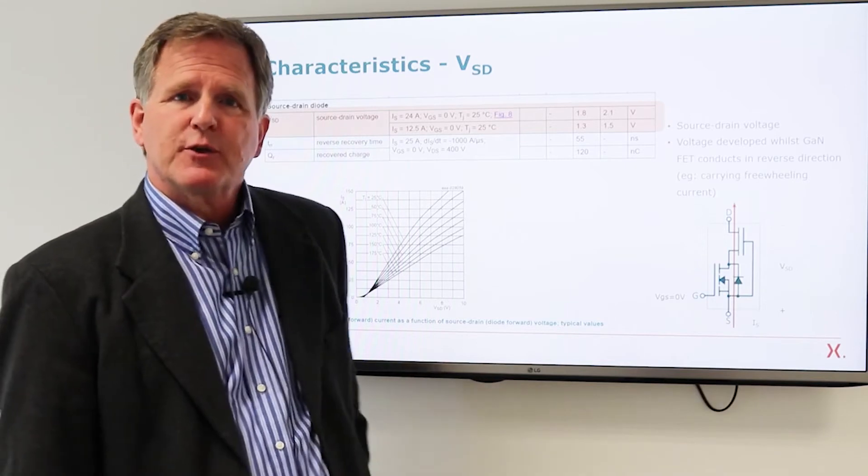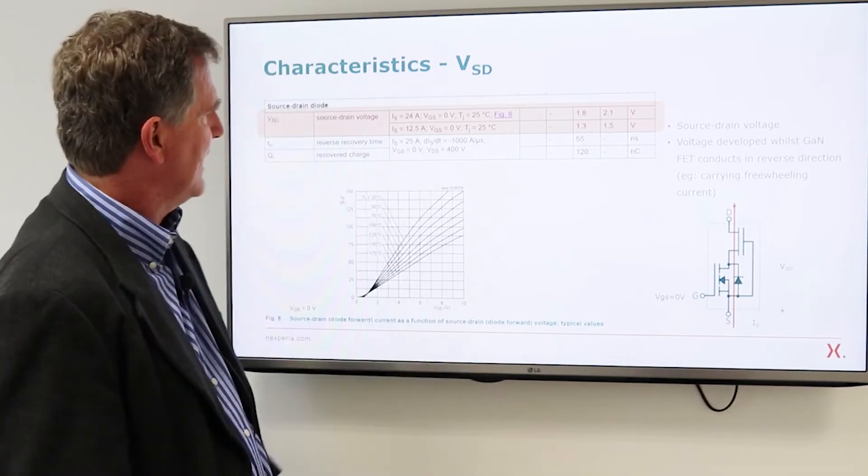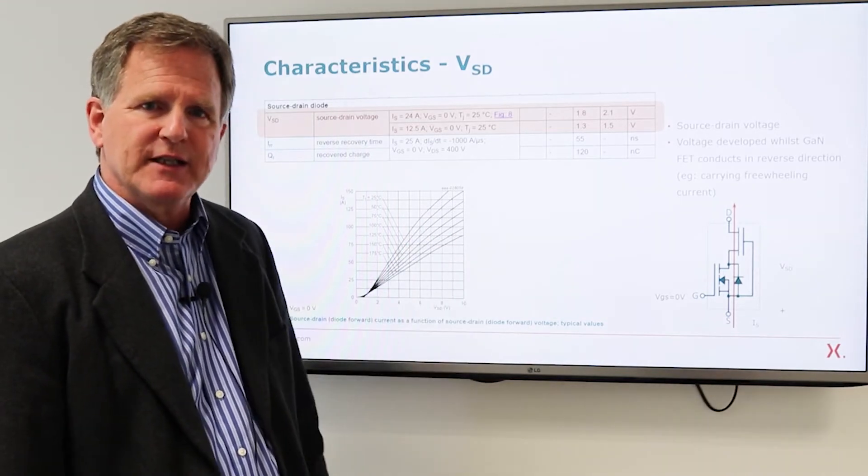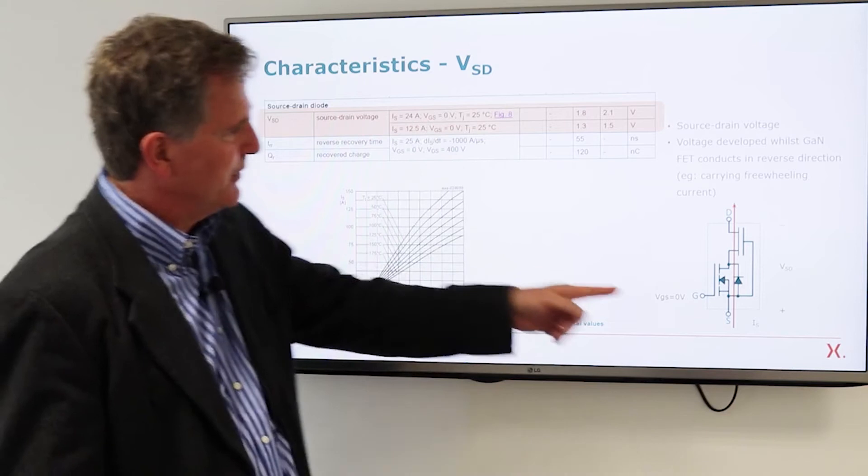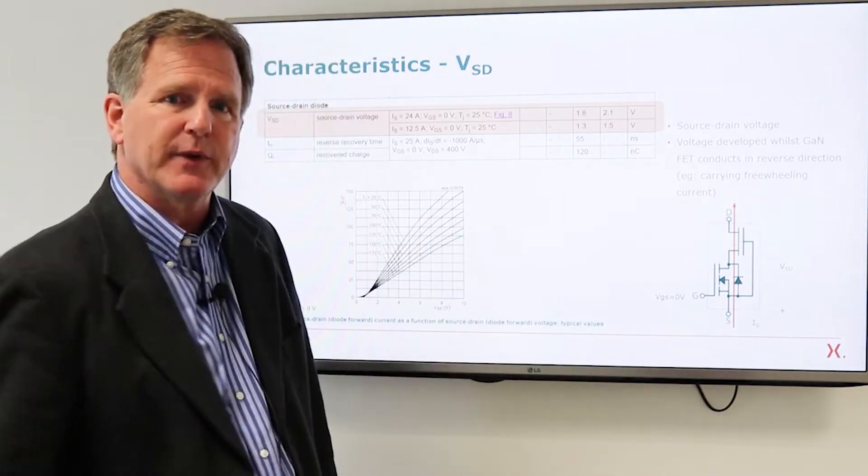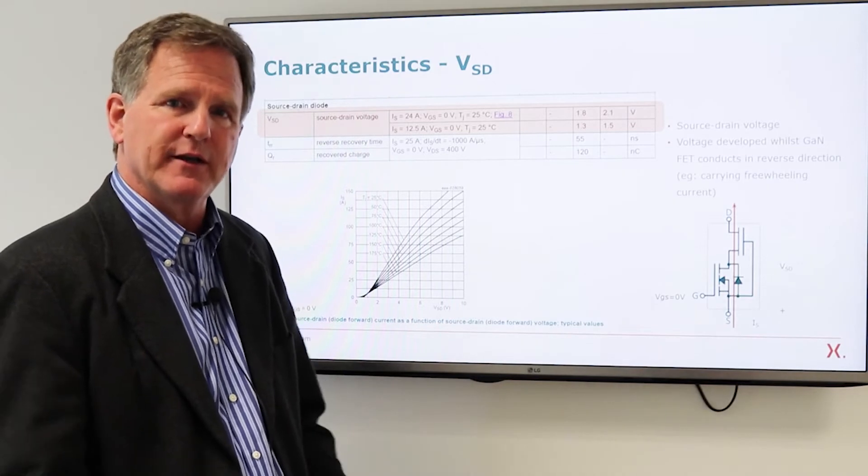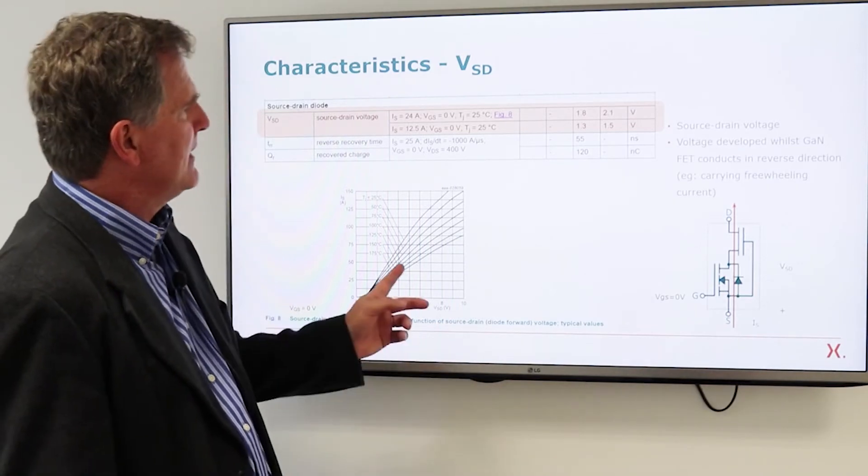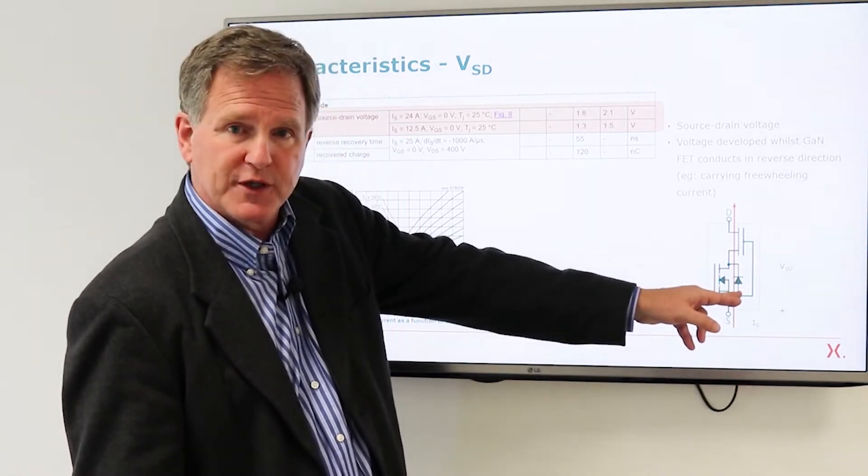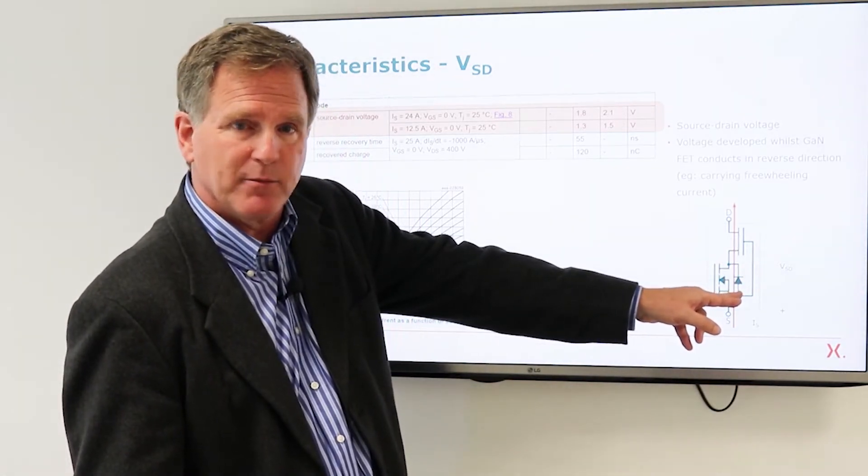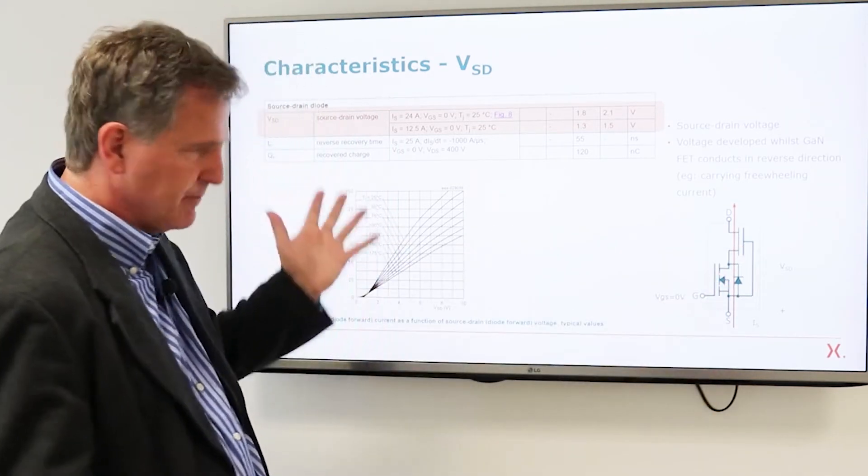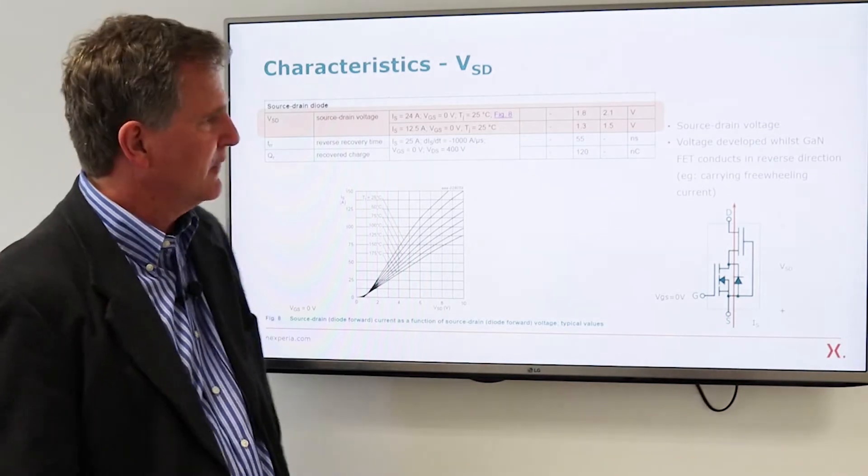There's a section on the source to drain diode. Now when we say diode the implication is the device is acting in a two terminal mode so VGS is zero the gate is connected to the source, current is going through it in the reverse direction it's acting like a rectifier carrying freewheeling current. And in this mode what you see is the voltage of the PN junction of the low voltage silicon MOSFET in series with some resistance associated with the GAN HEMT, basically what you would expect to see.